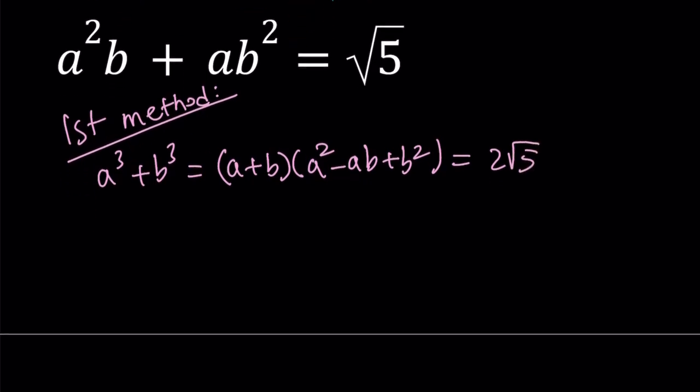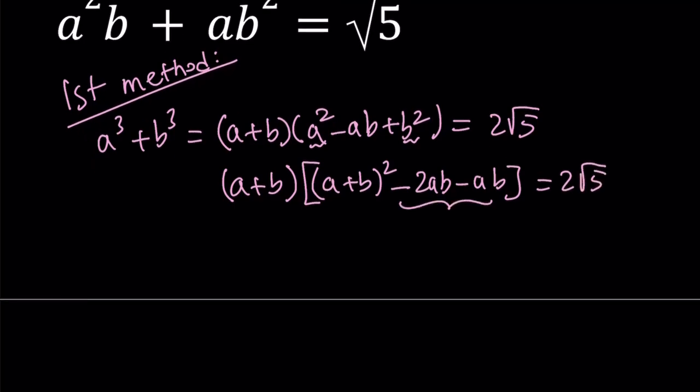I'm going to take that a² + b² and manipulate it to make it look like (a+b)², but we're going to have some extra terms. I can write a² + b² as (a+b)² - 2ab, and then subtract the additional ab. We have -2 minus 1, which equals -3. So we can write this as (a+b)[(a+b)² - 3ab] and the product equals 2√5.